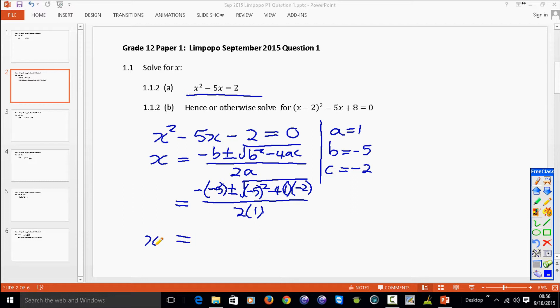So if you put it in your calculator, you can't put plus or minus in your calculator. You first have to put the plus and then you get the answer and go back and you put in the minus. You're supposed to get the following two answers: 5.37 or x is equal to negative 0.37.